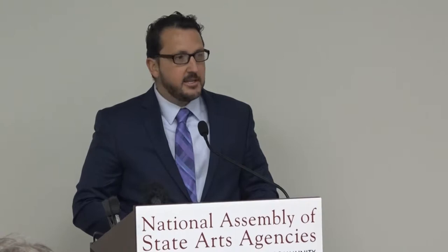How did we define arts and culture? BEA and NEA based the definition on the idea of a creative chain associated with arts and cultural production. The chain captures the economic value of the creation of a cultural product, to its production, to then the distribution, and finally the consumption. It is a definition consistent with definitions of arts and culture used by the United Nations and the European Union.